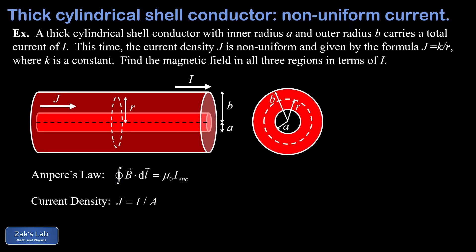In the previous video, we used Ampere's law to calculate the magnetic field generated by a thick cylindrical shell conductor carrying a current of I. Now in this video, we're going to throw in a new complication. The current density in the conductor is no longer uniform — in fact, it's dropping off like 1 over r, where r is the distance to the symmetry axis of the conductor. The current density J is given by k divided by r, where k is a constant.